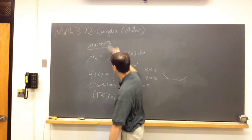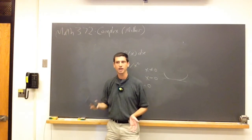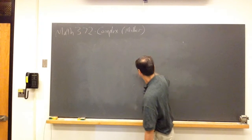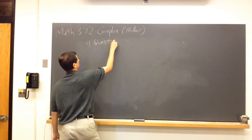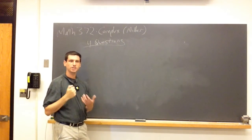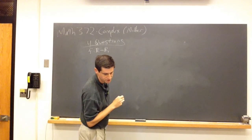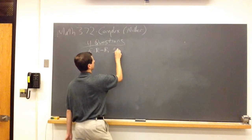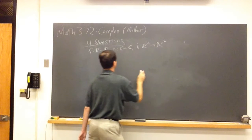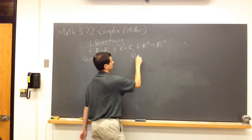This is a good time to shift to the four questions. I know Monday is Rosh Hashanah — if people are not here, that's absolutely fine, I will record the lecture. I want to compare real analysis to complex analysis. So we have F from ℝ to ℝ, G from ℂ to ℂ, and H from ℝ² to ℝ².